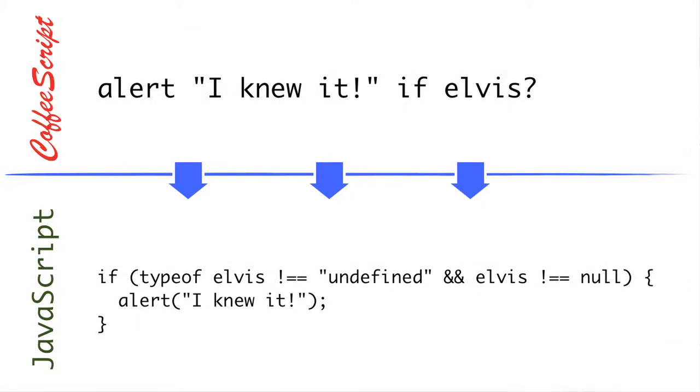You can see alert is being called with the arguments 'I knew it'. Finally, there's a predicate, which we've seen before, but it's using a question mark at the end of the variable. So what this expands out to is that it tests for both the type of Elvis being undefined and the type of Elvis being null.